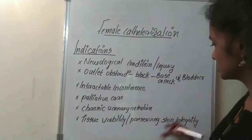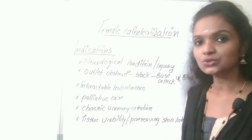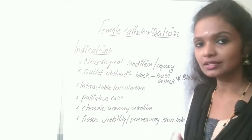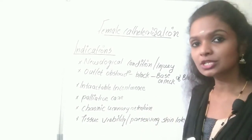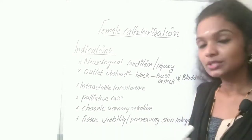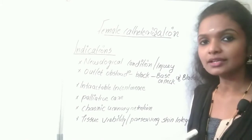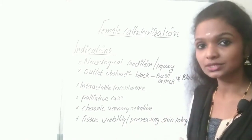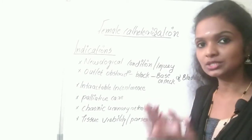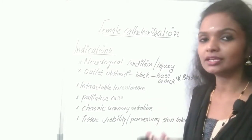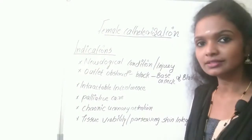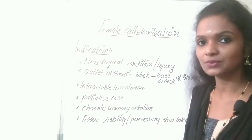Tissue viability or preserving skin integrity is another indication. When there is tissue damage or injury in tissues surrounding the perineal region or legs, passing urine can touch these injuries, irritating the patient and increasing the chance of infection. So when there is a tissue damage, injury, or surgical wound in the perineal region or legs, catheterization is applied to avoid infections and irritations.